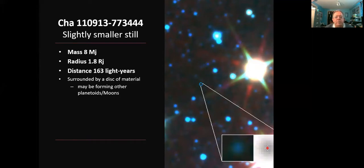And it's 163 light years away and been directly imaged. And again, seems to have a dust ring around it. So maybe in the process of forming its own planetoid or moon systems orbiting around this free floating separate planet.